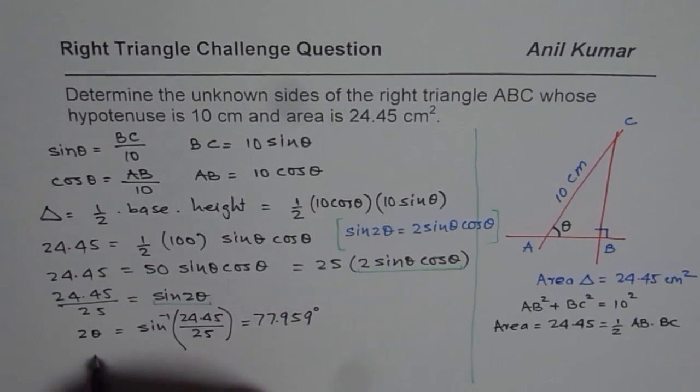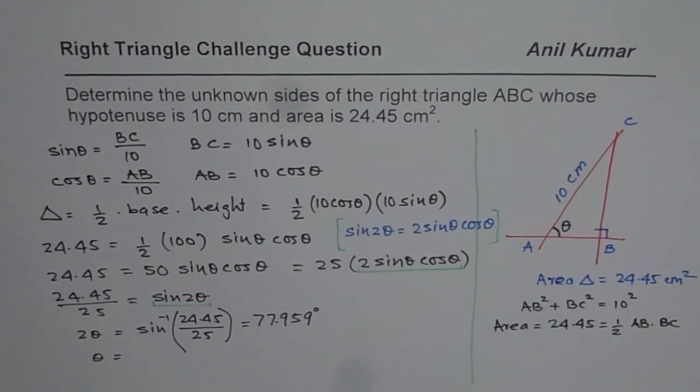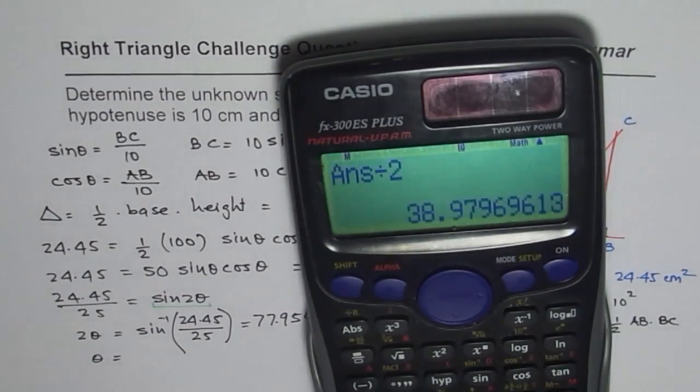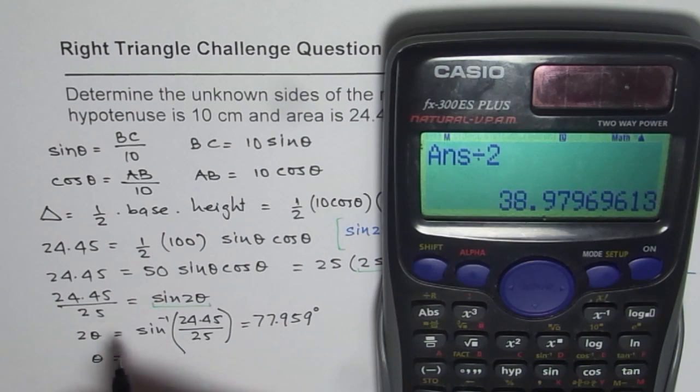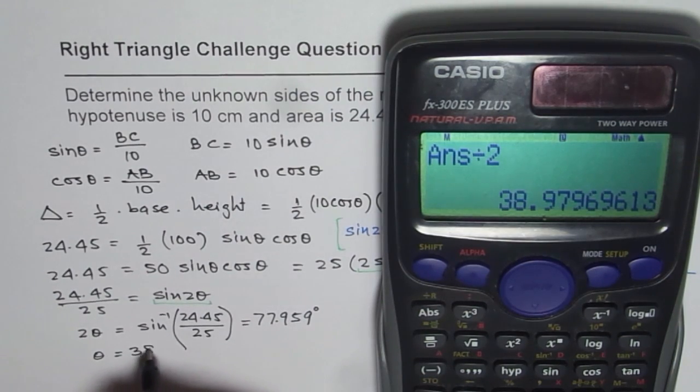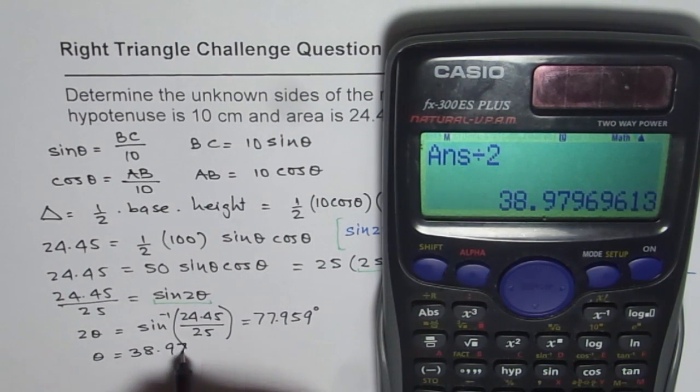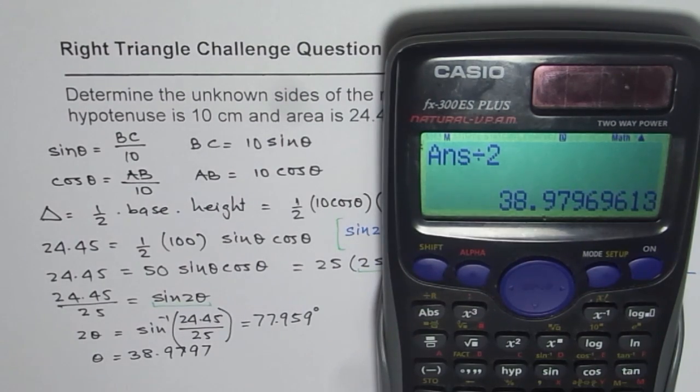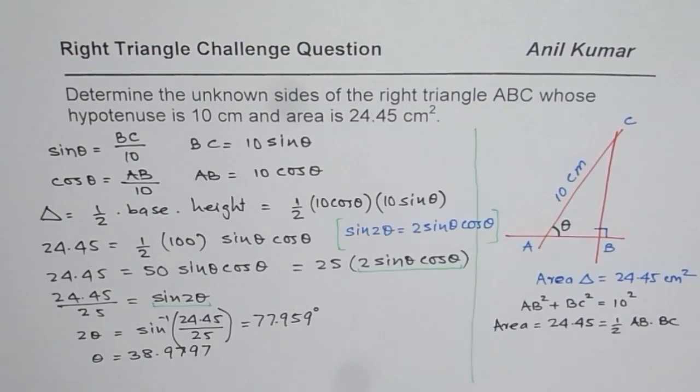So theta should be half of this, right? So theta will be half of this. So let me divide that by, let me divide this by 2. We get 38.9796. So we get 38.9796. Let me write this as 9. Okay, 9, 7. Fine.